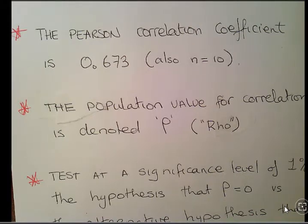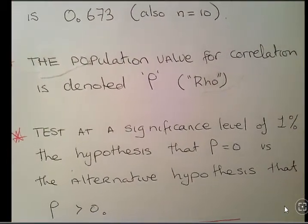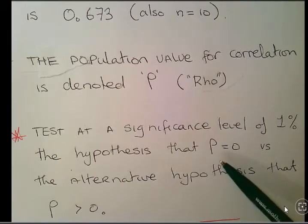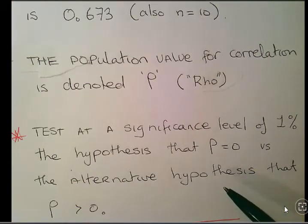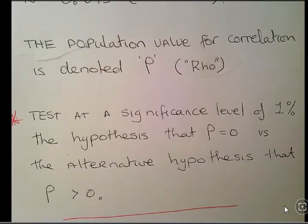Now, the population value for the correlation, which is what the Pearson correlation coefficient is an estimate of, is denoted rho (RHO). The job at hand in this video is to test at a significance level of 1% the hypothesis that rho equals 0 versus the alternative hypothesis that rho is greater than 0. If it is 0, there is no relationship between diastolic blood pressure and systolic blood pressure. If it is greater than 0, it means there is a positive relationship.